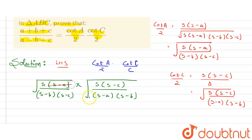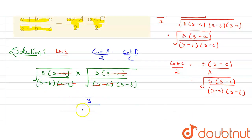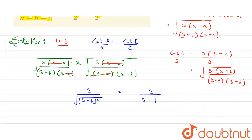Now, the square root of (s - a) cancels with the square root of (s - a), and the square root of (s - c) cancels with the square root of (s - c). In the numerator, root s times root s gives s. In the denominator, (s - b) times (s - b) gives (s - b) squared. Taking the square root, this simplifies to s / (s - b).